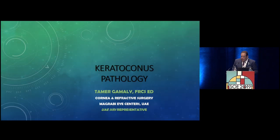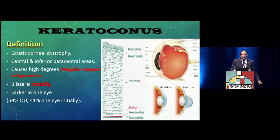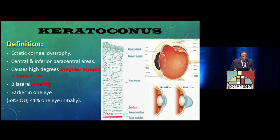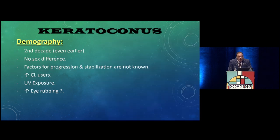Keratoconus is a very common disease, at least in our area. The classical definition is that it's an ectatic corneal dystrophy affecting the central and inferior paracentral part of the cornea, causing a high degree of irregular astigmatism. It is mostly bilateral, though rarely unilateral cases occur. About 60% of cases are bilateral, but 40% can show one eye affected before the other. It usually affects people in the second decade, with no sex differences.